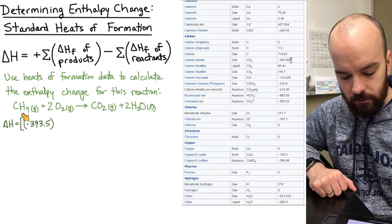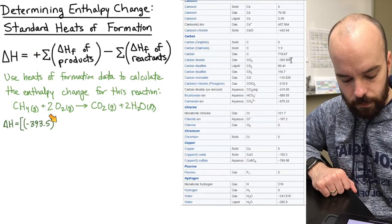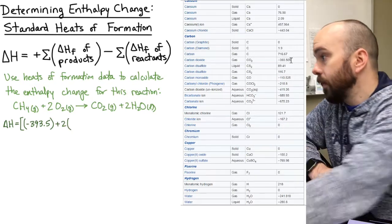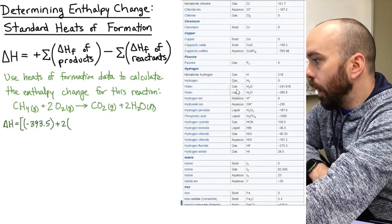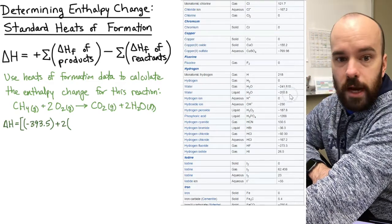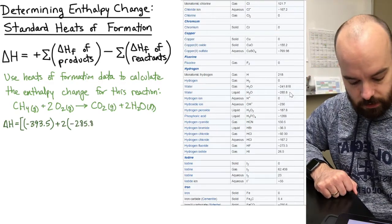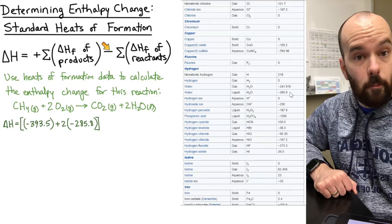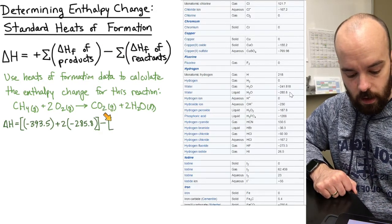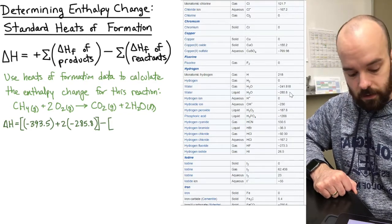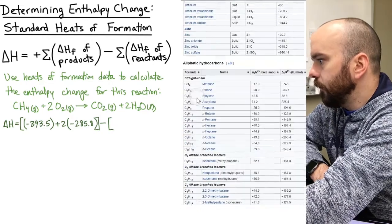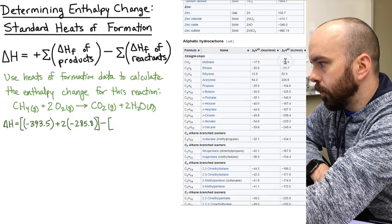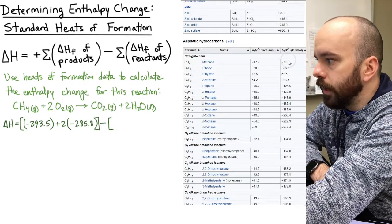Keeping the sign, I write negative 393.5, plus two times the heat of formation of liquid water. Looking up water — it's liquid water, so I use the liquid value: negative 285.8 kJ/mol. So the products bracket reads: [negative 393.5 + 2(negative 285.8)]. For the reactants, I use a minus sign that distributes to both compounds. The first reactant is methane; looking it up under hydrocarbons, CH₄(g) is negative 74.9 kJ/mol.